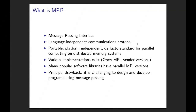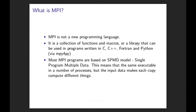MPI is extremely popular and many packages and software libraries have parallel MPI versions. But the principal drawback is it is quite hard to program in MPI. It's generally hard to program for parallel computers — you have all the difficulty of writing a program for a single computer, which is already hard enough, and then on top of it, you add the complication that now you have multiple computers forming a parallel computer. MPI is not a new programming language; instead, it's a collection of functions and macros in a library that can be used in programs written in C, C++, Fortran, and Python. In Python, MPI is made available via a module called MPI4PY.